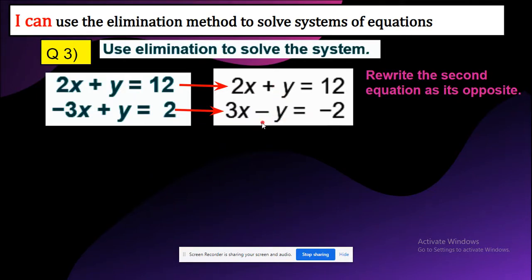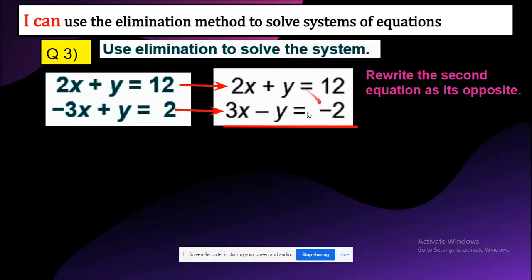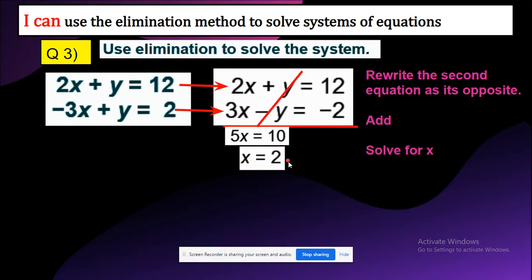Now that we have different signs, we can eliminate a variable. So we can add both equations. 2x plus 3x is 5x, and then y minus y is zero. Cancel that. 12 minus 2 is 10. So you're going to divide both sides by 5, which equals 2. So x equals 2.